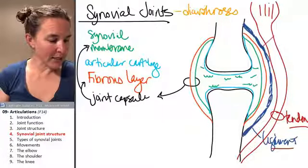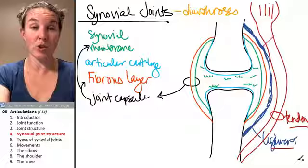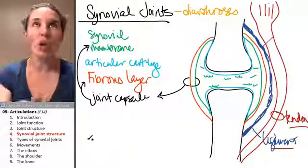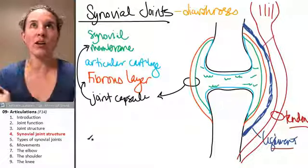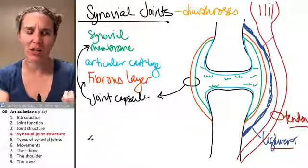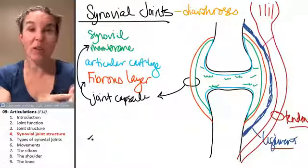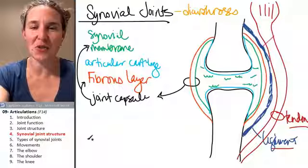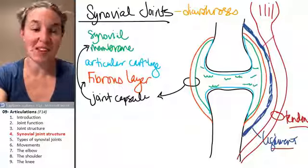That's it — that is good enough for what you should know about the structure of a synovial joint. Now we're going to look at the different kinds. We had two kinds of cartilaginous joints and three kinds of fibrous joints, and we actually have six different kinds of synovial joints.